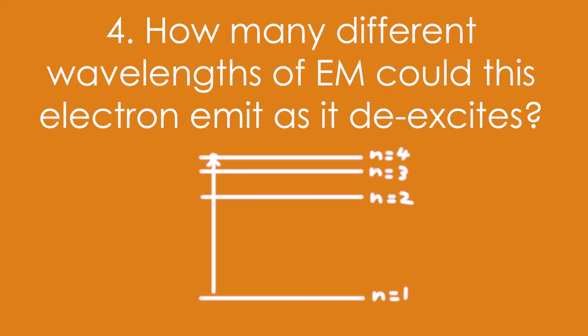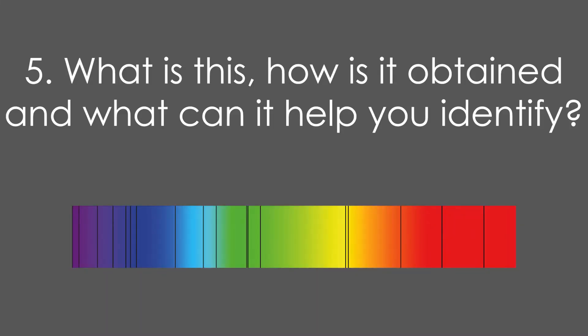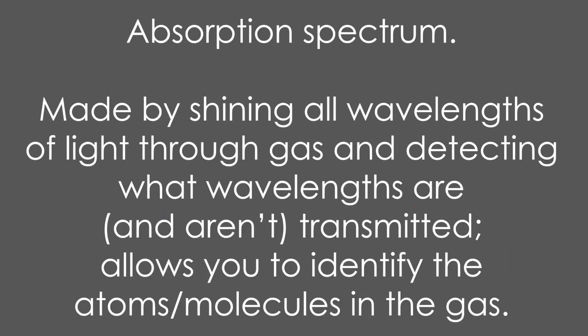Four, how many different wavelengths of EM could this electron emit as it de-excites? It's six. Five, what is this, how is it obtained, and what can it help you identify? It's an absorption spectrum. It's made by shining all wavelengths of light through a gas and detecting what wavelengths are and aren't transmitted. This allows you to identify the types of atoms or molecules in the gas.